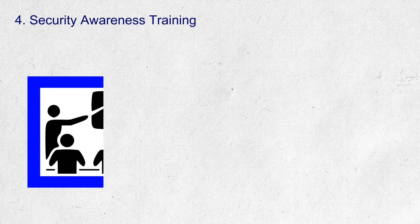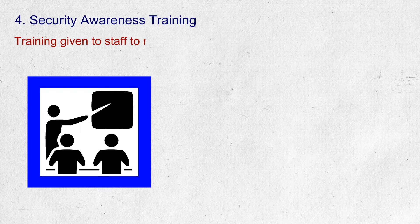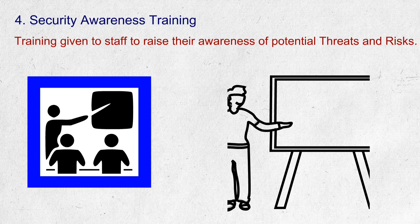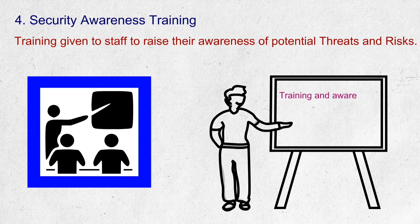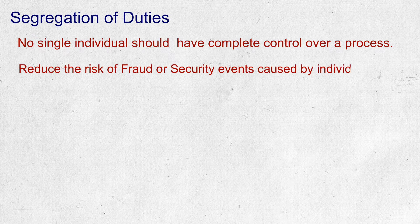Security awareness training is also an example of preventive control. Training given to employees to raise their awareness and understanding of potential security threats and risks, as well as best practices for protecting against them, will help prevent incidents from occurring. Segregation of duties is another preventive control, which ensures that no single individual has complete control over a process, reducing the risk of fraud or security events caused by one individual's actions.